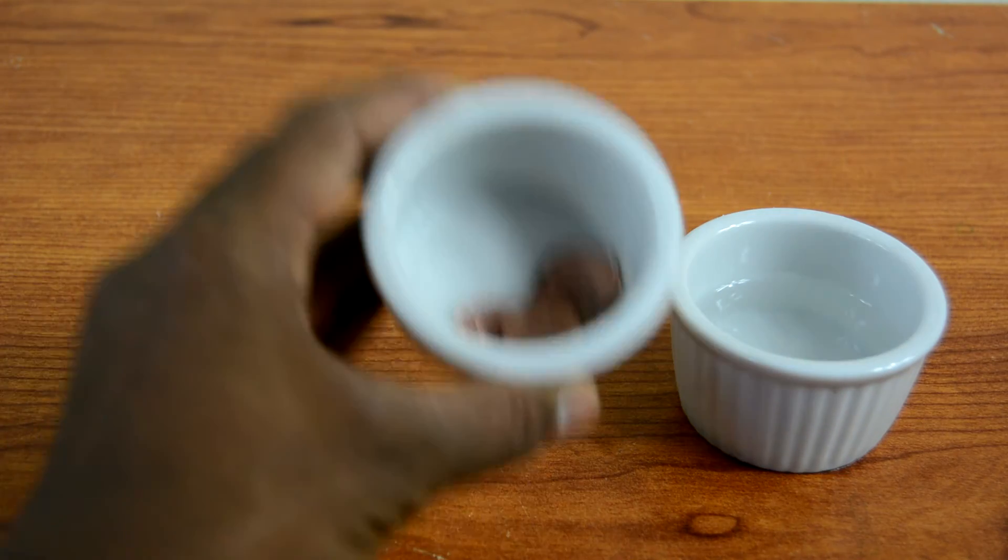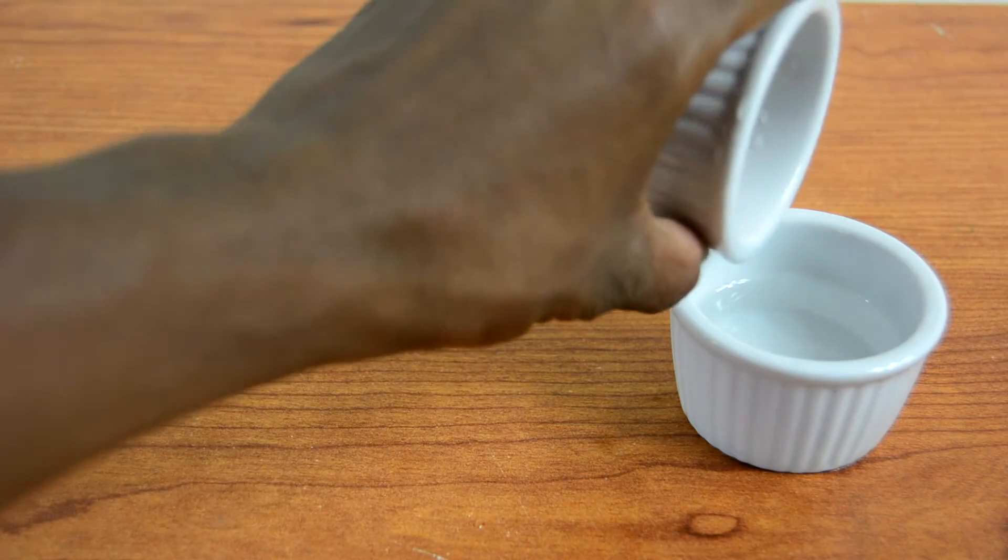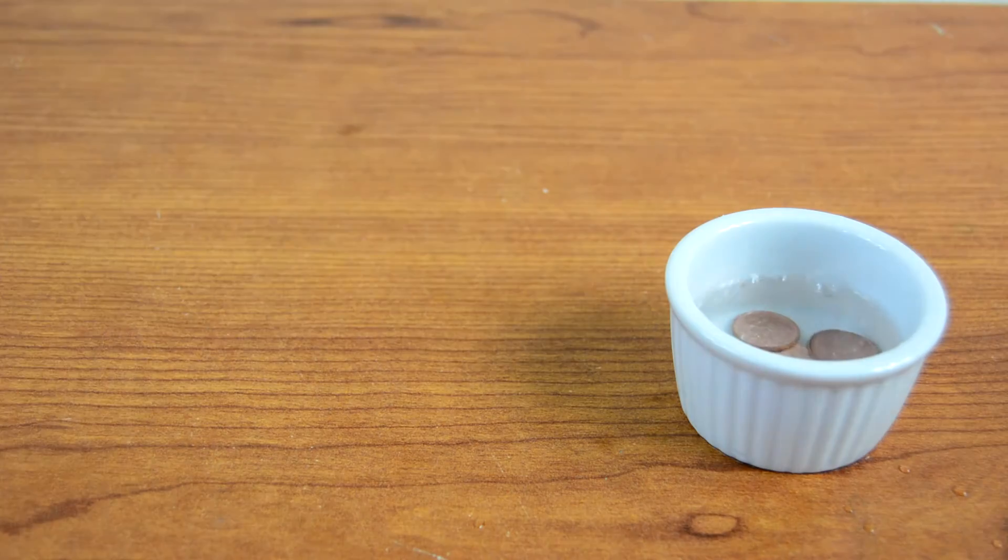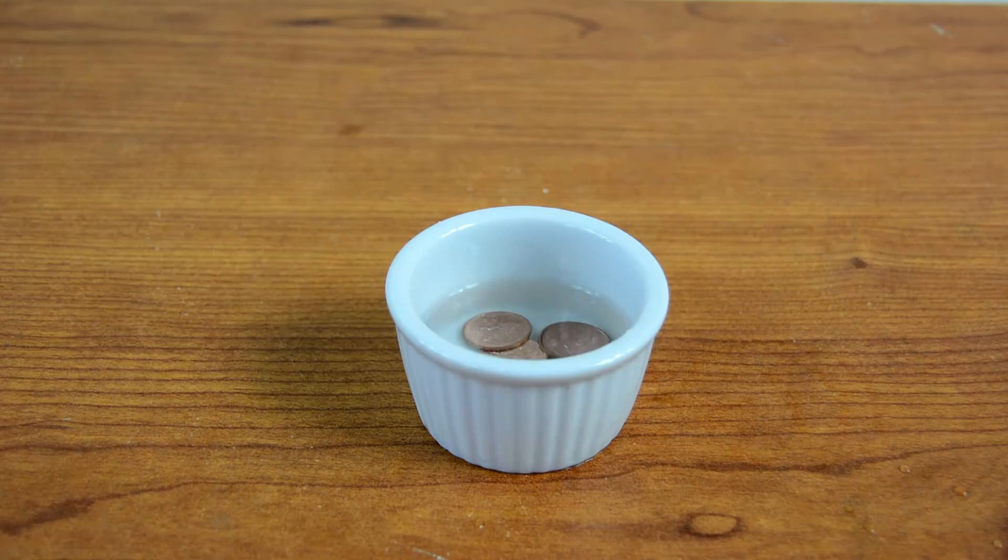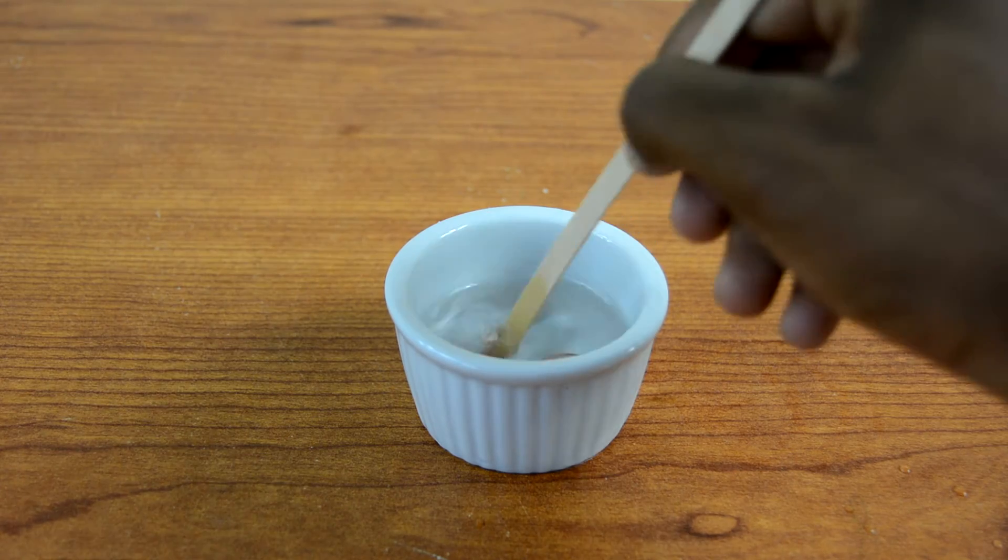Once you've got the pennies you are going to have to put them in water just to wash them. Mix it up for a little bit so the vinegar washes off. You don't have to clean it too thoroughly, just drop it in there, mix it up, and take it out.